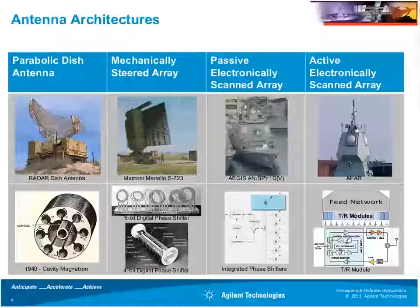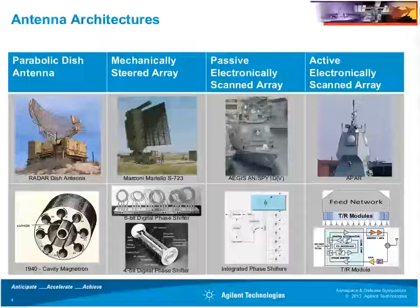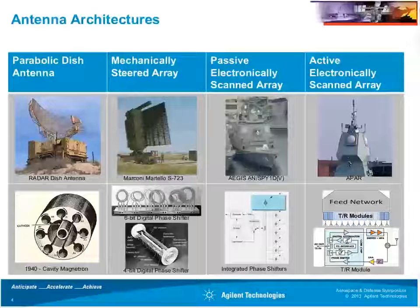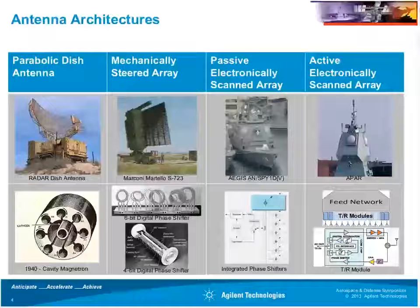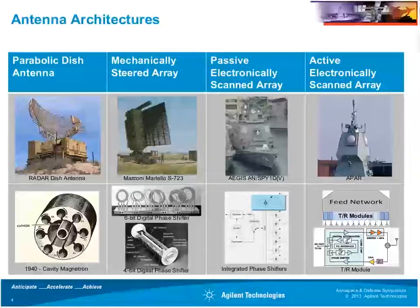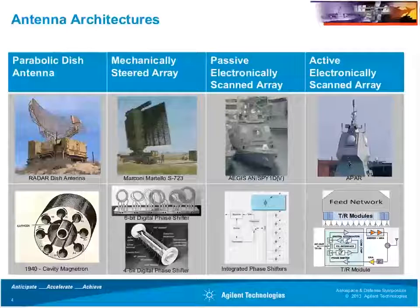I'll start with an overview — the timeline or history I mentioned. Starting on the left-hand column, you see in the 1940s the mechanically steered antennas used for radar applications — the ones that rotate, with the parabolic dish with a feed horn that blocks part of the antenna aperture. These are some of the early designs specifically in the area of radar. As time progressed, technology evolved toward more planar arrays that don't require the parabolic dish, removing the feed horn so there's no blocking of the aperture.